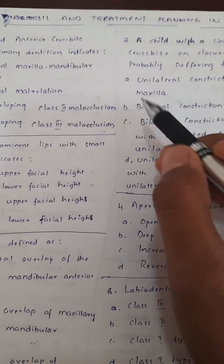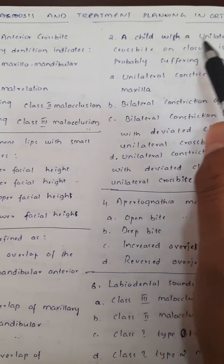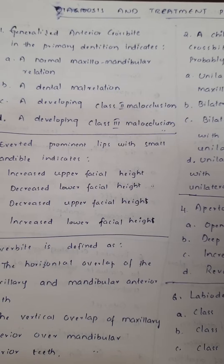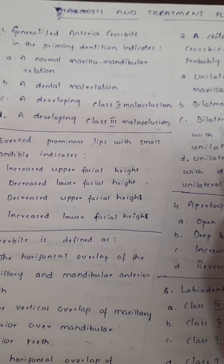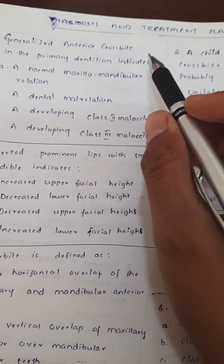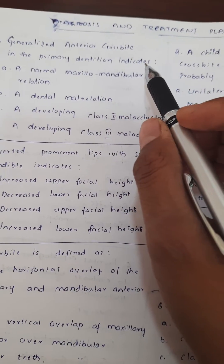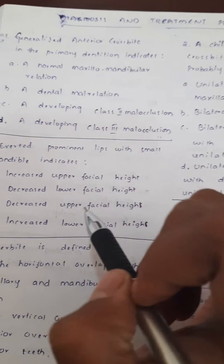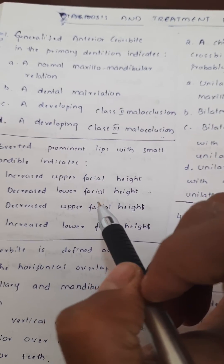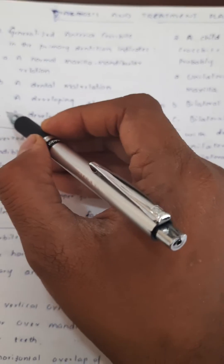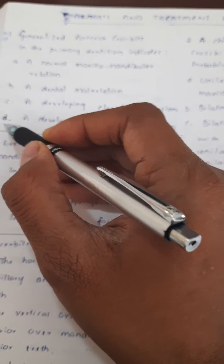The topic is diagnosis and treatment planning in orthodontics. Looking at different questions: generalized anterior crossbite in the primary dentition indicates a developing Class 3 malocclusion.